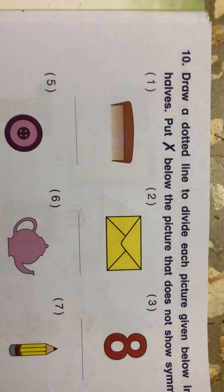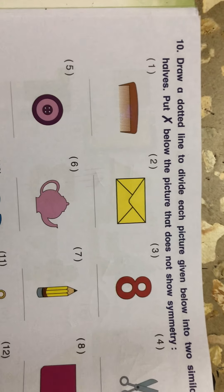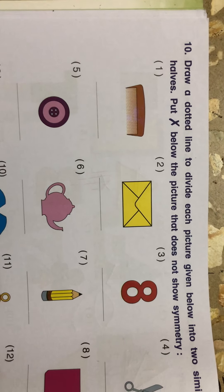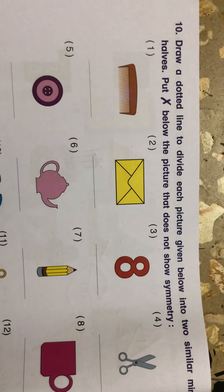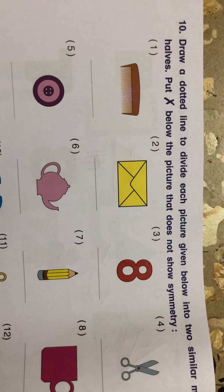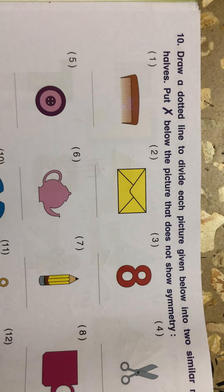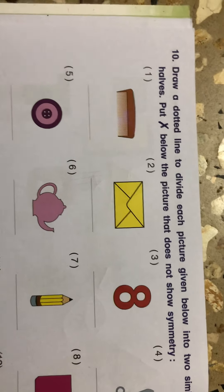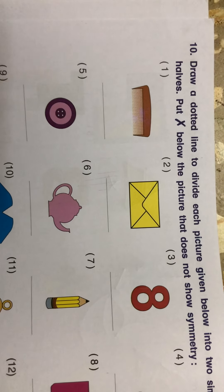Now read this last question for today. Draw a dotted line to divide each picture given below into two similar mirror halves. Similar means same. Mirror half means exact. Put cross below the picture that does not show symmetry. Means what you have to do? You have to identify the symmetrical object here.